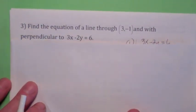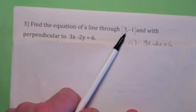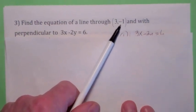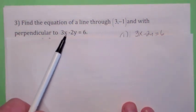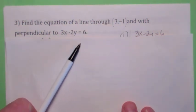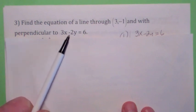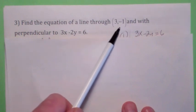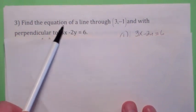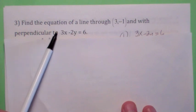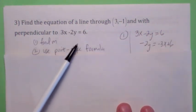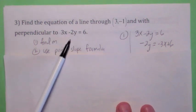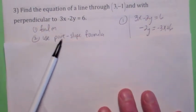If you have something like this — find the equation of a line that goes through the point 3, negative 1 and is perpendicular to a given line — again, what information do you need to find the equation of a line? You need a point and the slope. So you have a point; now we have to determine the slope of our line, which is perpendicular to the given line.